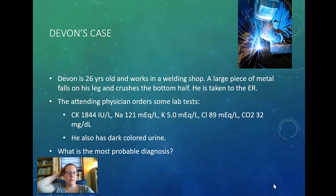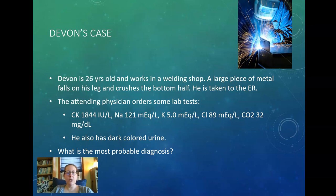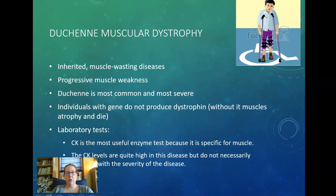Here's a case: Devin is a 26-year-old who works in a welding shop. A large piece of metal falls on his leg and crushes the bottom half. He's taken to the ER. Lab tests show CK of 1,844 — high; sodium 121 mEq/L — low; potassium 5.0 — high; chloride 89 — low; CO2 32 — high; and he has dark-colored urine. What is the most probable diagnosis based on these lab values? You'll answer that in your Nearpod lesson.